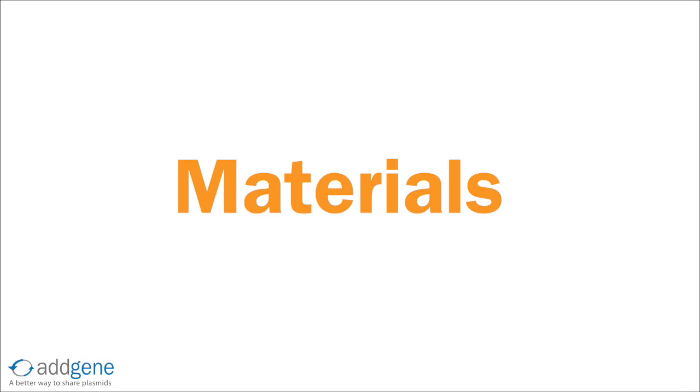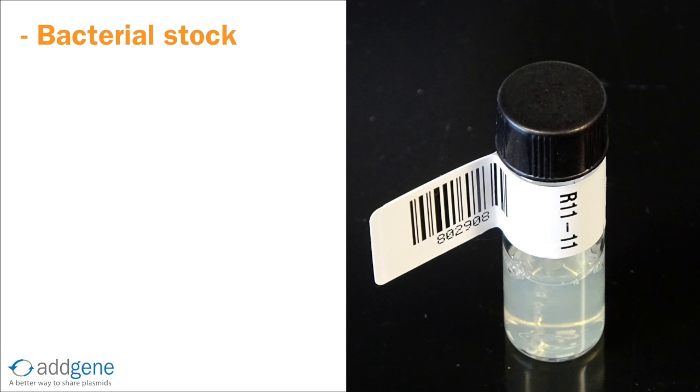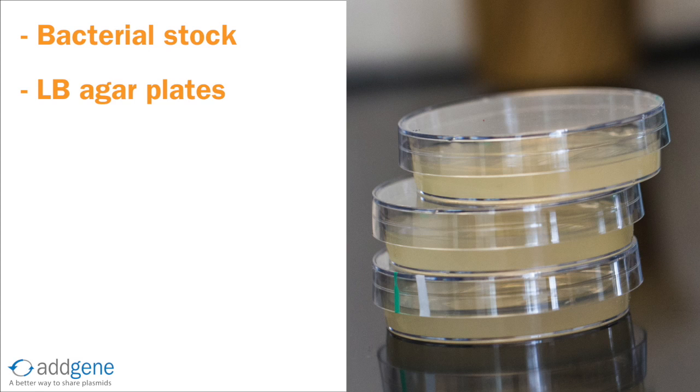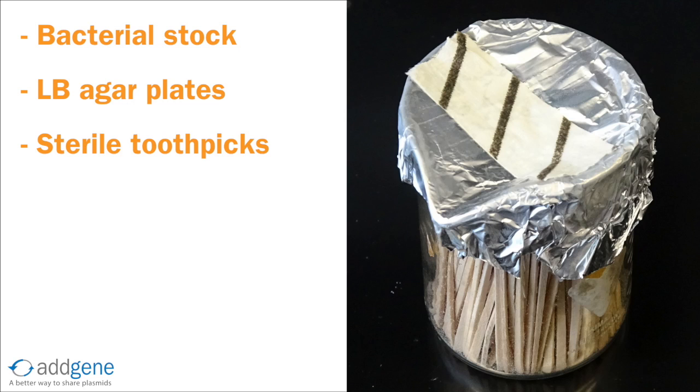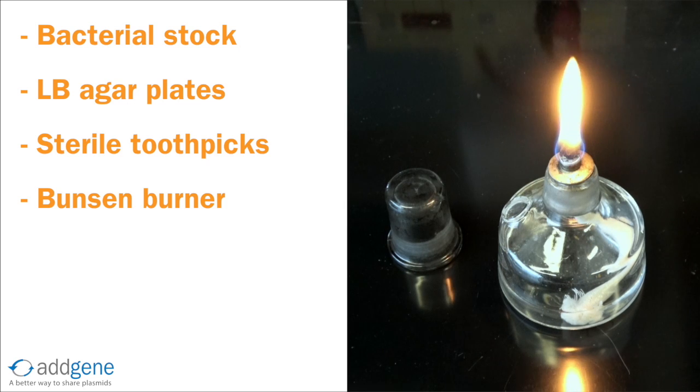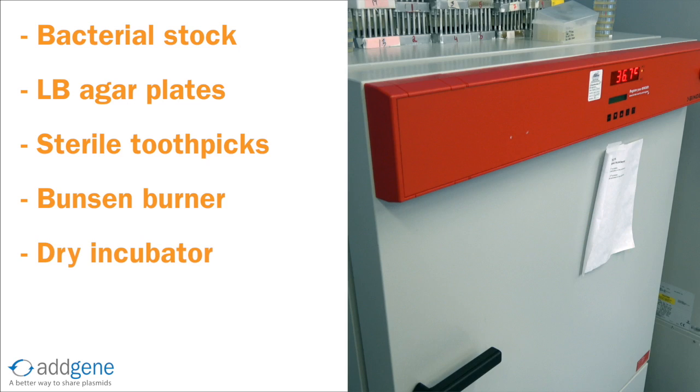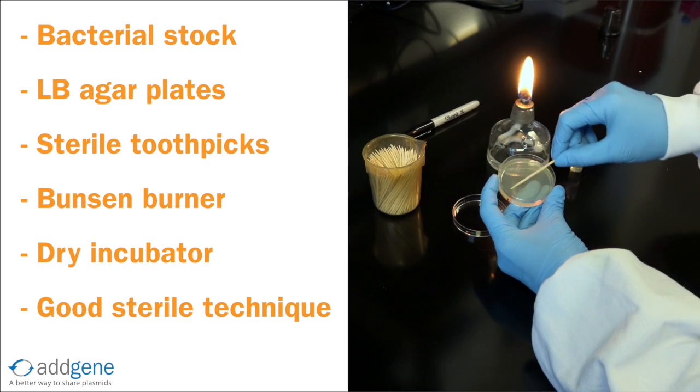Before we begin, we'll need to gather the necessary materials. You will need bacterial glycerol stock or stab with your strain of interest, LB agar plate with the appropriate antibiotic, sterile toothpicks or sterile loop, Bunsen burner or other flame, dry incubator at 30 or 37 degrees Celsius, and good sterile technique.